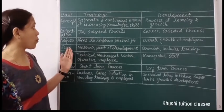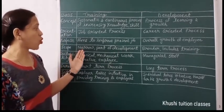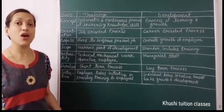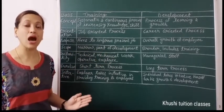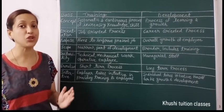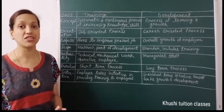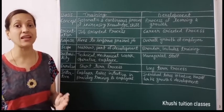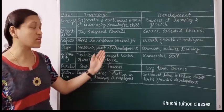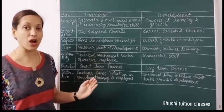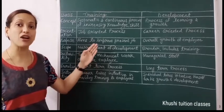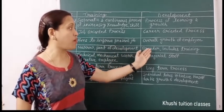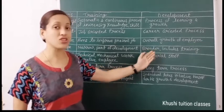The next difference is scope. Training has a narrow scope — it is a part of development. If an organization periodically changes every worker's duty and gives them training to operate every machine in the factory, then their development occurs. So training is a part of development, whereas development has a broader scope and includes training.